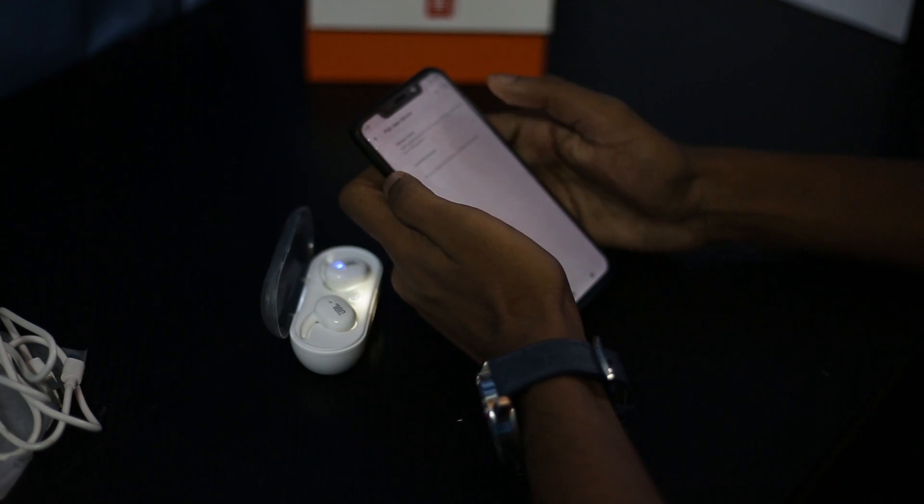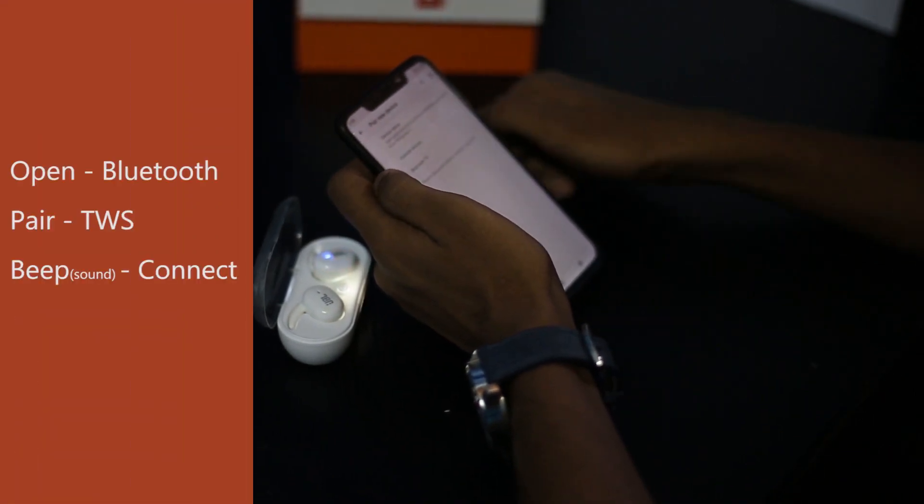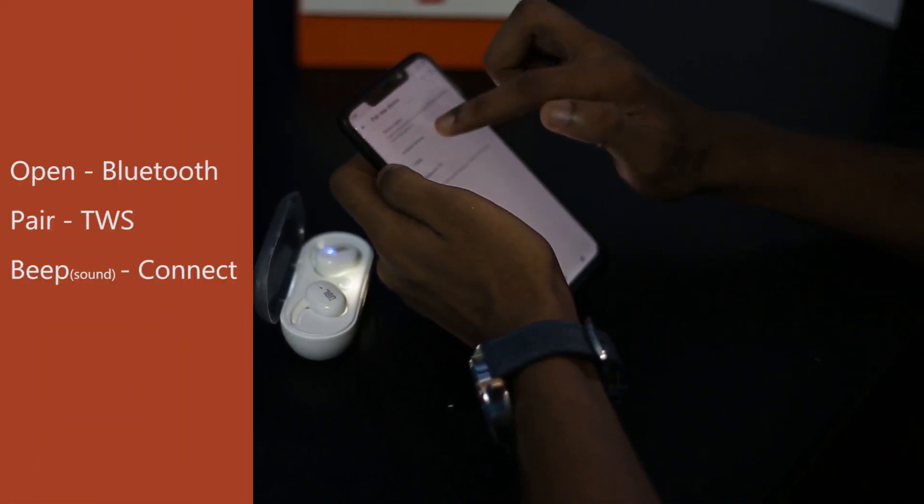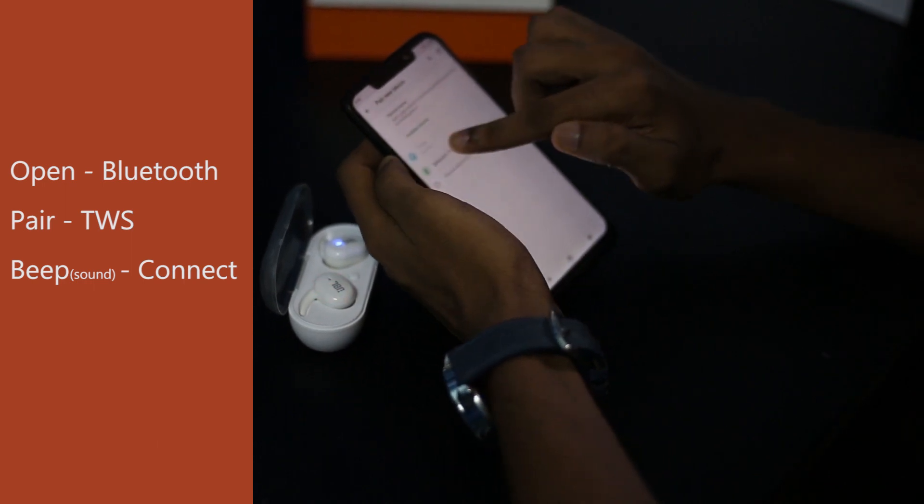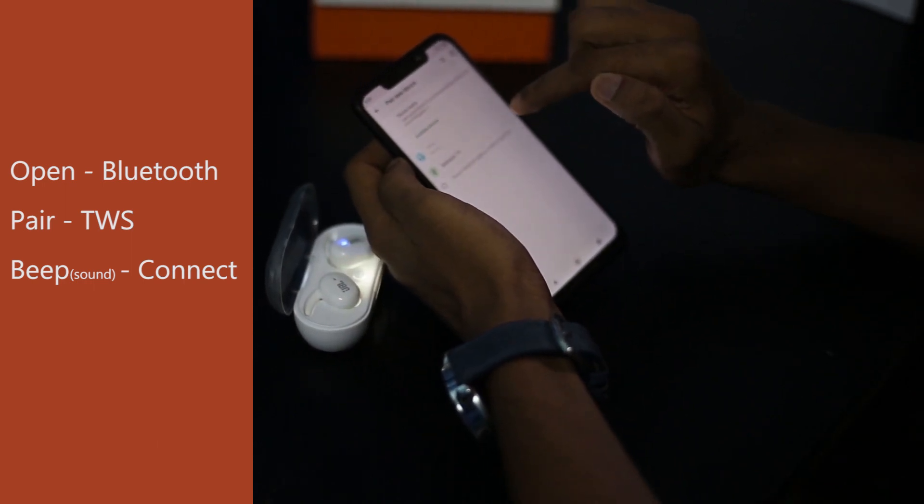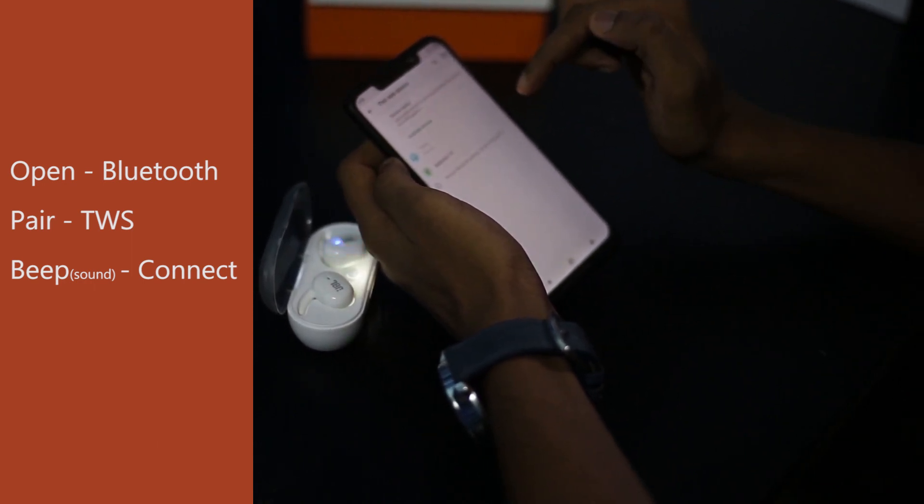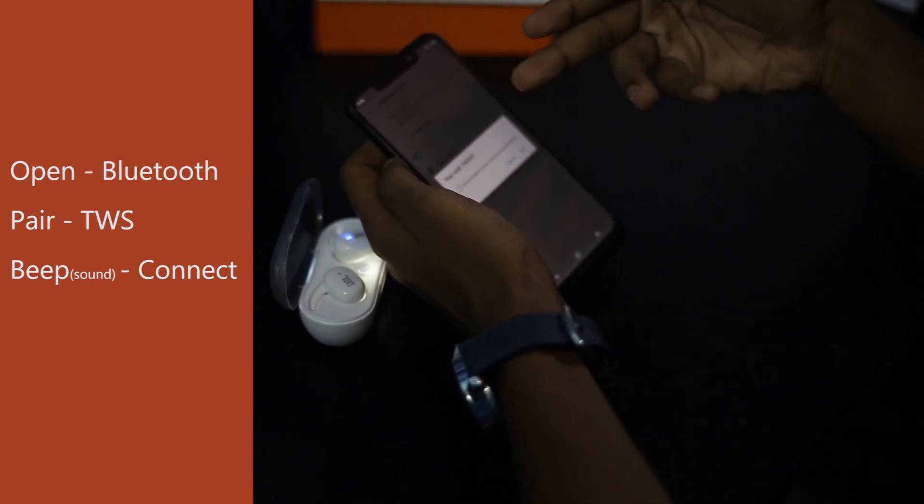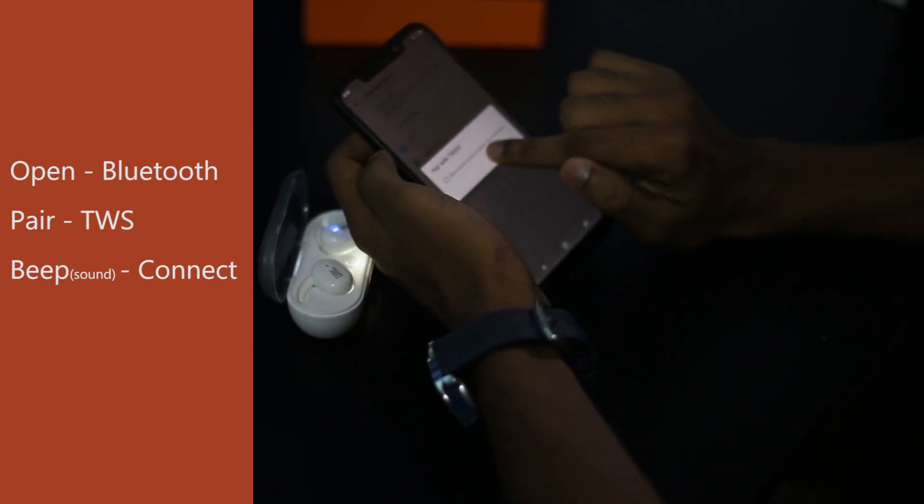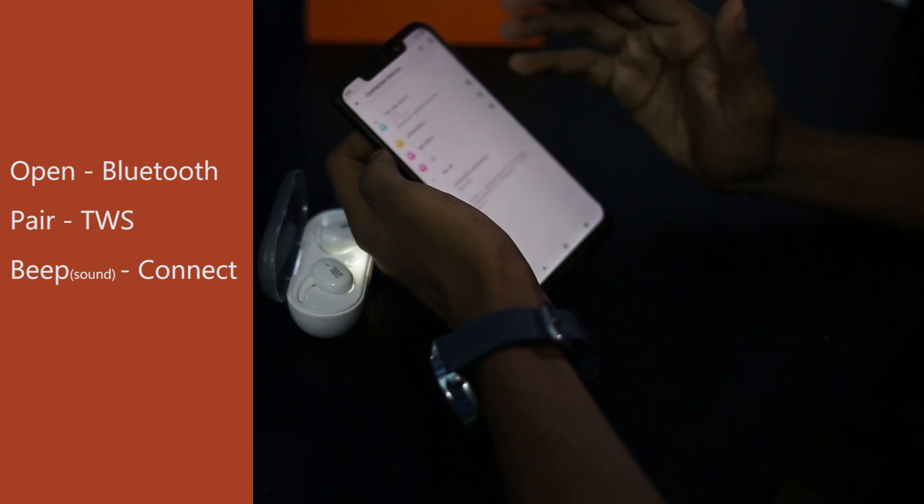To connect this device, click on the TWS pairing option on your device. Once paired, it will connect to your phone.